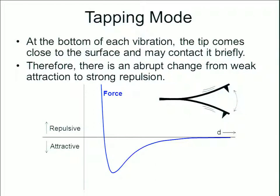If we consider tapping mode and look at the force-distance curve, at the bottom of each vibration the tip comes very close to the surface and may actually contact it briefly, depending on what you consider contact. There will be a van der Waals attractive force and a van der Waals repulsive force for every oscillation — 15,000 to 500,000 cycles per second. There is an abrupt change from weak attraction to strong repulsion, and this happens very quickly and continuously.